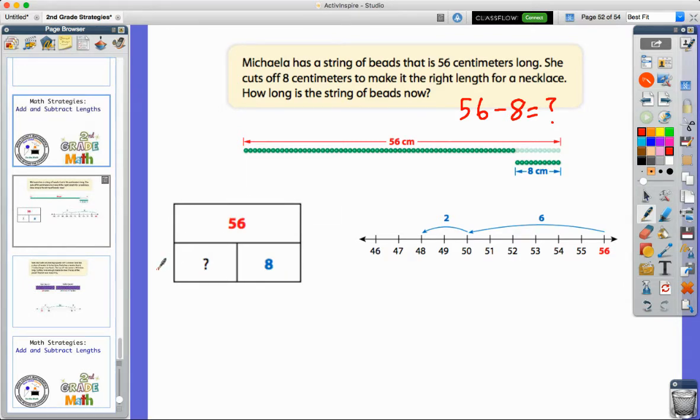So they're also showing us that here with a part, part, whole or a bar model. Again, we see our total and then we see one of our parts. And so we're looking for the missing part. And so again, when I look at that model, knowing that one of the parts is missing, this is going to have to be a subtraction problem.